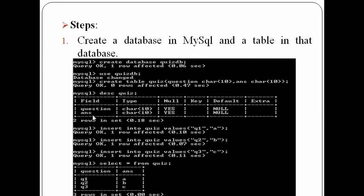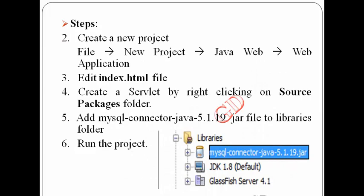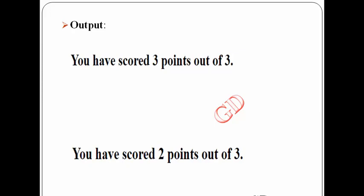These are the steps for creating this application. First, I'll create a database in MySQL. QuizDB is the name of my database, in which I'm creating a table named Quiz having two columns: question and answer. I'm inserting three records — questions Q1, Q2, Q3 with corresponding answers A, B, and C. The expected output is a quiz where selecting all correct options gives 3 points; any mistake results in 2 or 1 point.